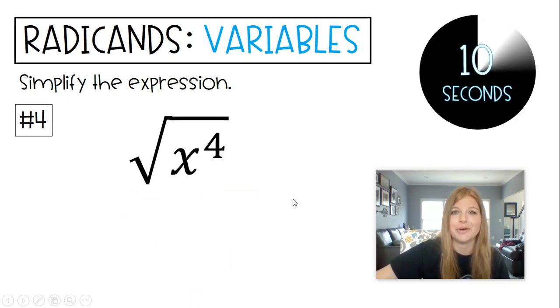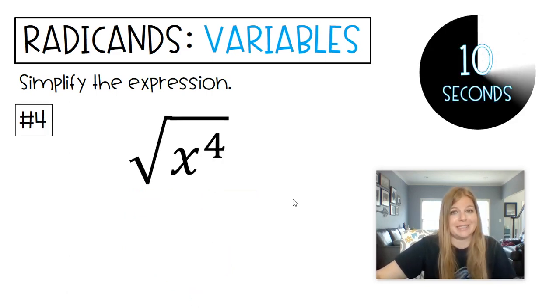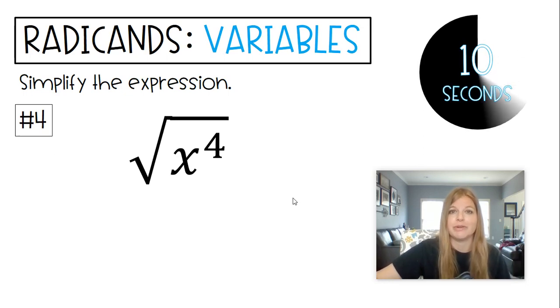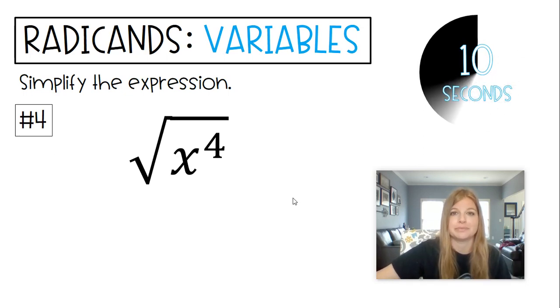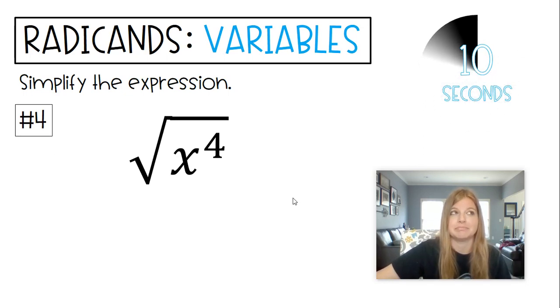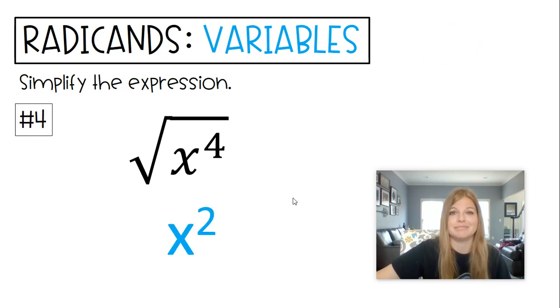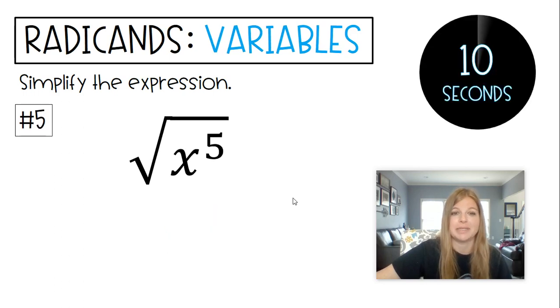Square root of x to the fourth — this one's easy. Square root of x to the fourth is x to the second. Even to even, no absolute value bars needed.